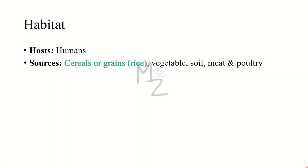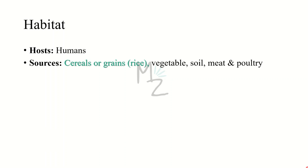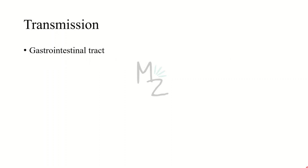Habitat: humans are the hosts, but sources include cereals or grains such as rice, vegetables, soil, meat, and poultry. Spores on grains like rice survive steaming and rapid frying. The spores germinate when rice is kept warm for many hours — for example, reheated fried rice. Transmission: the portal of entry of Bacillus cereus is the gastrointestinal tract.